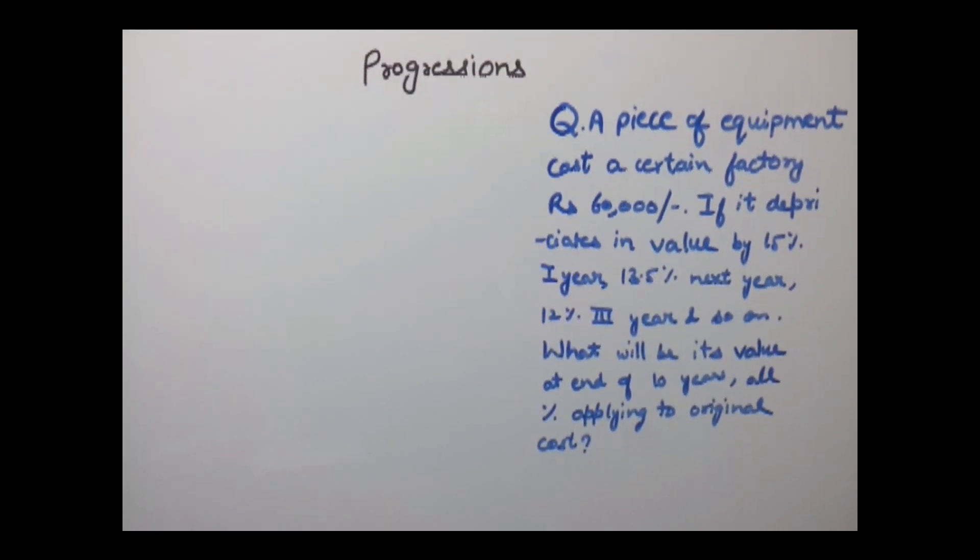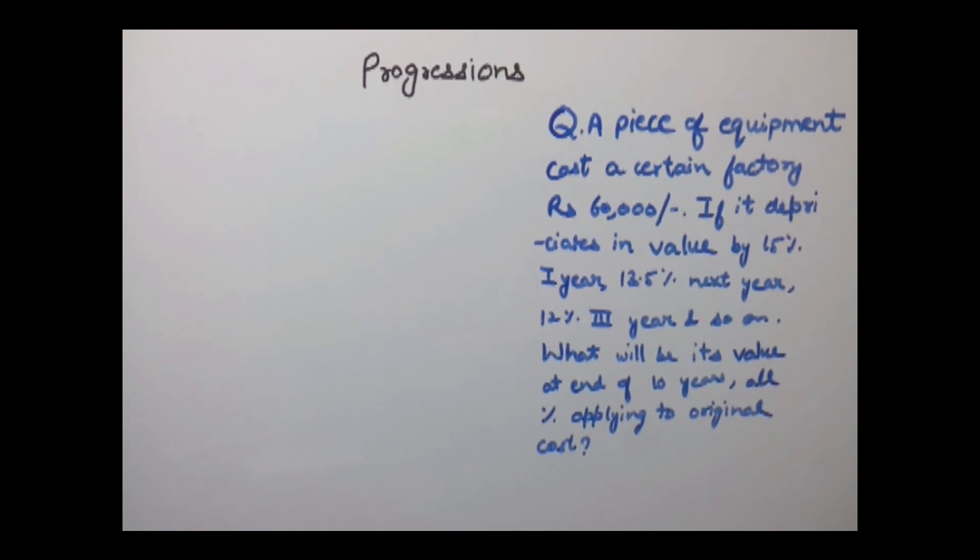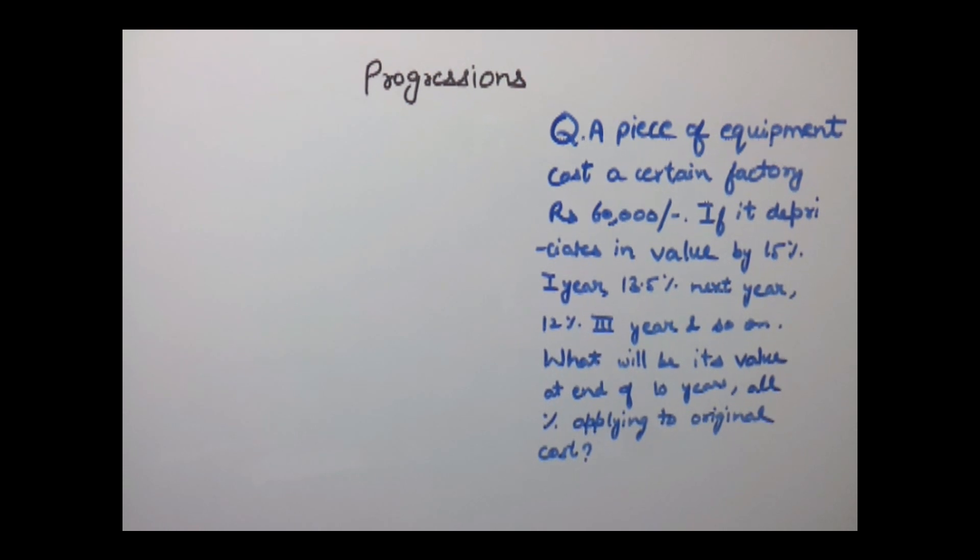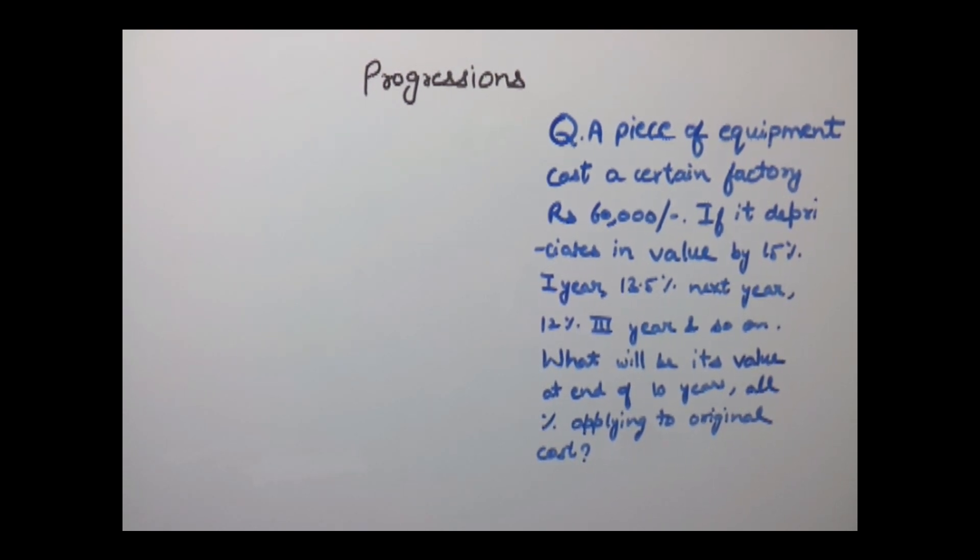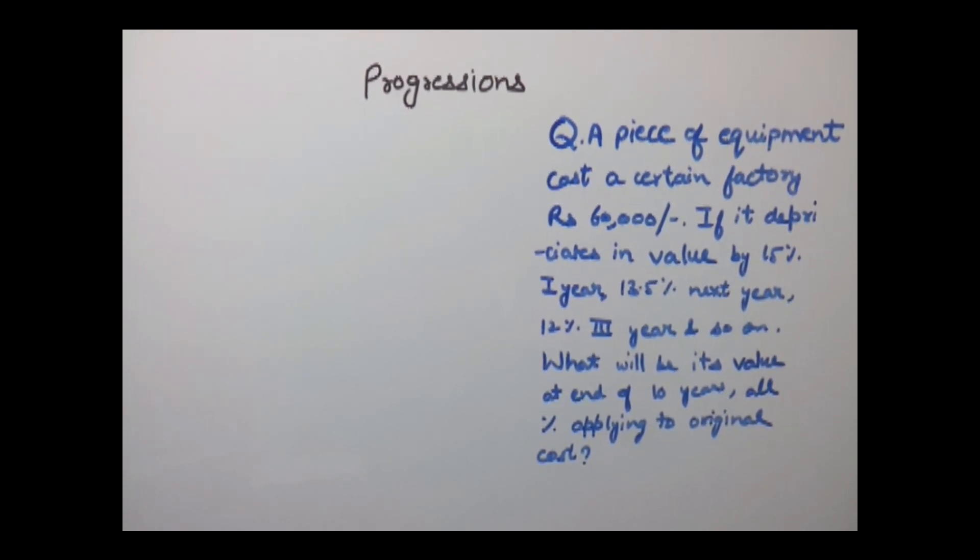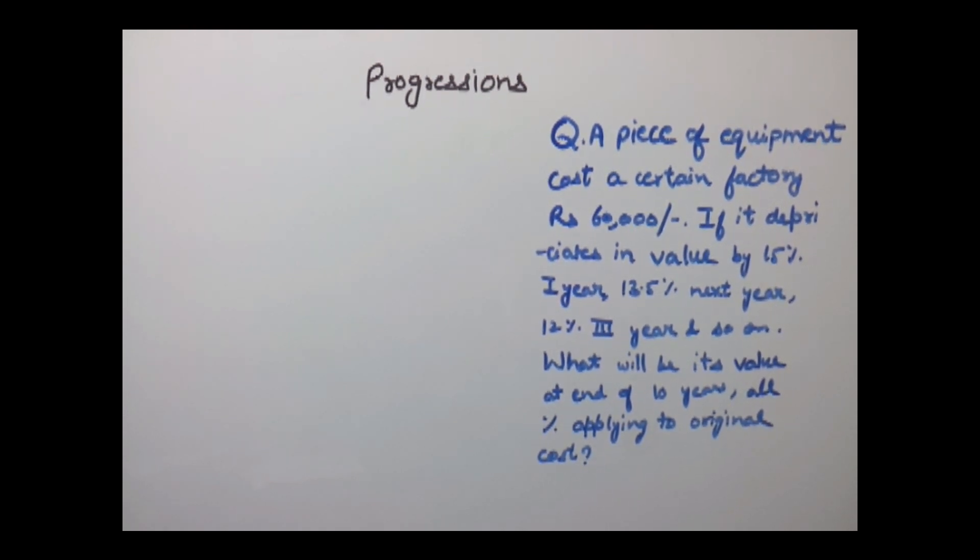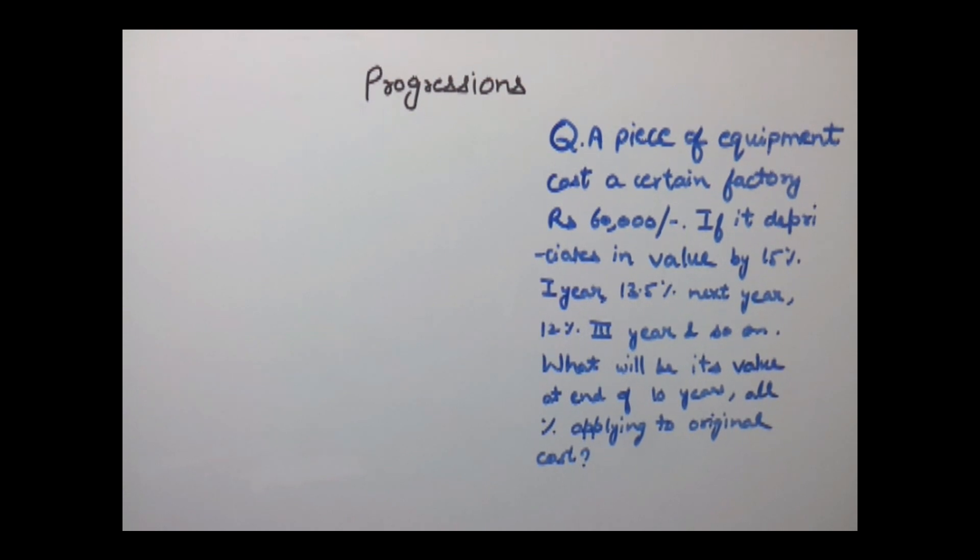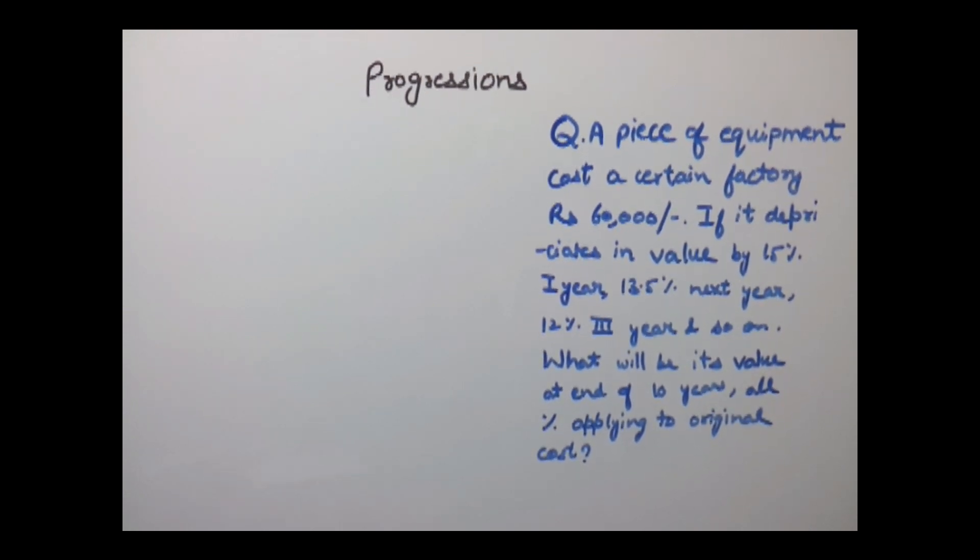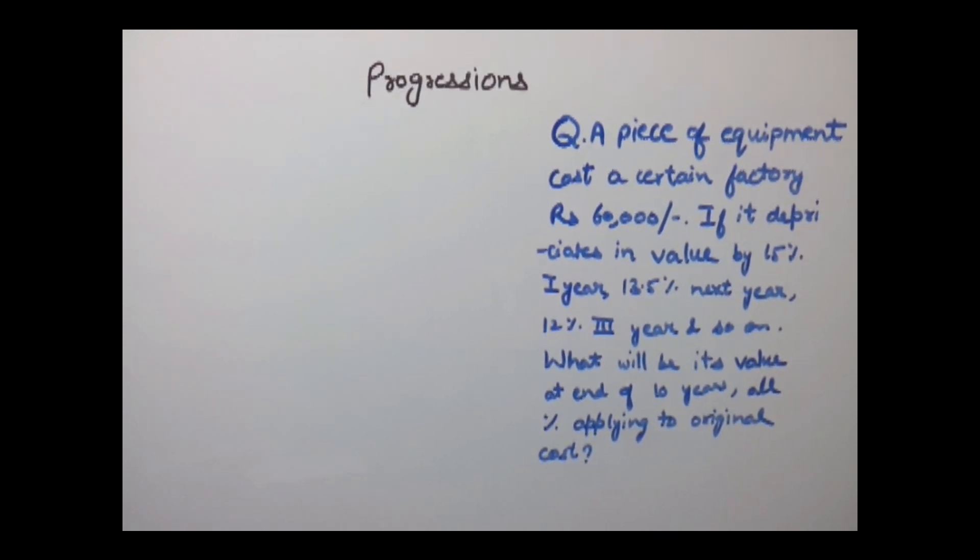The example is: a piece of equipment costs a certain factory Rs 60,000. If it depreciates in value by 15% first year, 13.5% next year, 12% third year and so on, what will be its value at end of 10 years, all percentages applying to original cost?